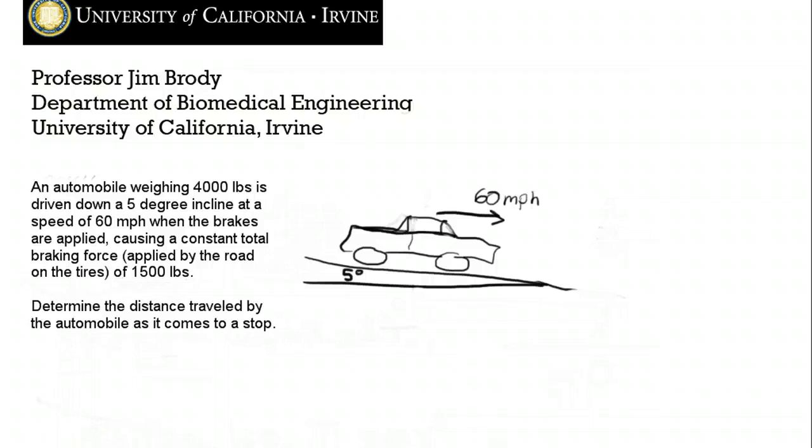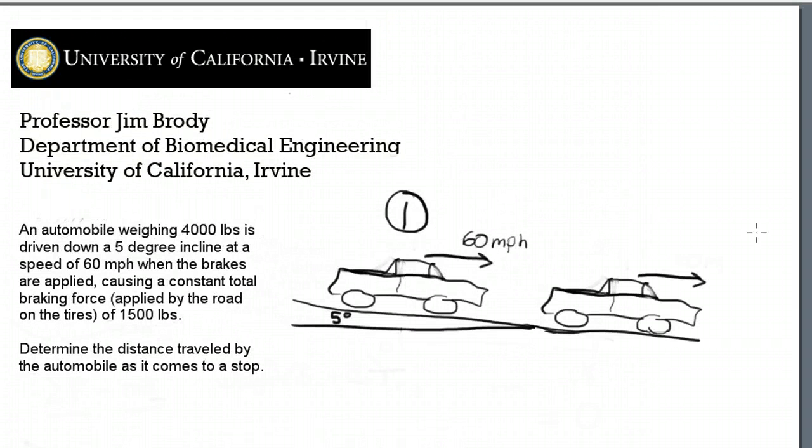Let's sketch this out. We have the car shown here, and it's at the first time point. I'll write a 1 here. It's moving at 60 miles per hour down this slope. At a later point, the second time point, the car is traveling 0 miles per hour. And it has traveled a total distance x between the first time point and the second time point.